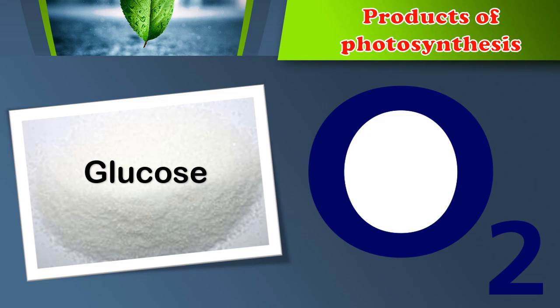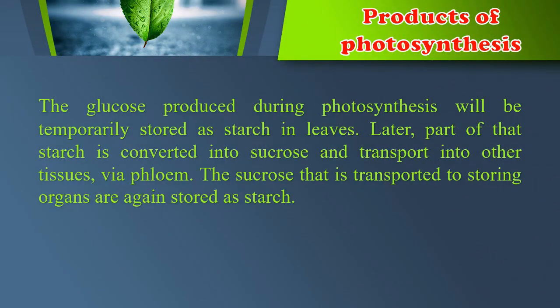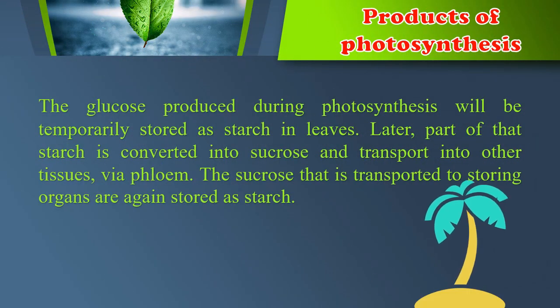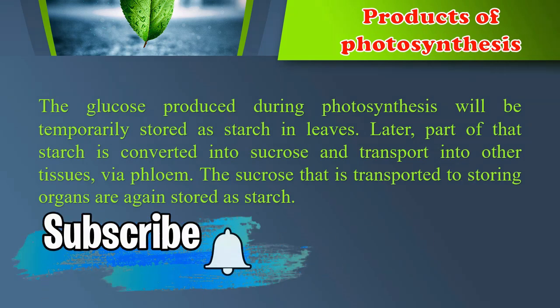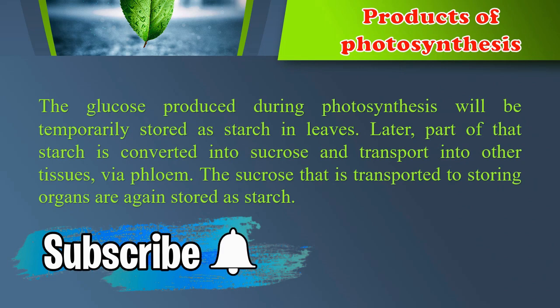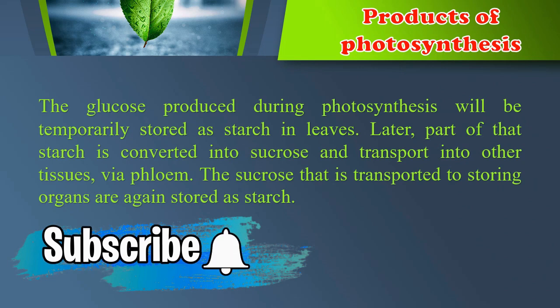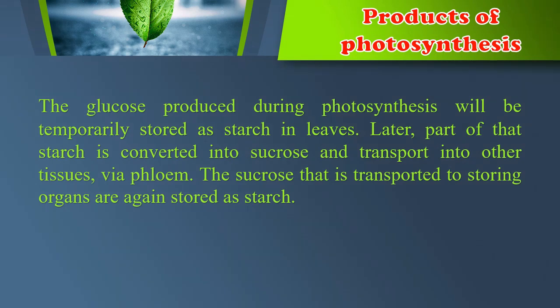Products of Photosynthesis: Glucose and Oxygen. The glucose produced during photosynthesis will be temporarily stored as starch in leaves. Later, part of that starch is converted into sucrose and transported into other tissues via phloem. The sucrose that is transported to storing organs is again stored as starch.